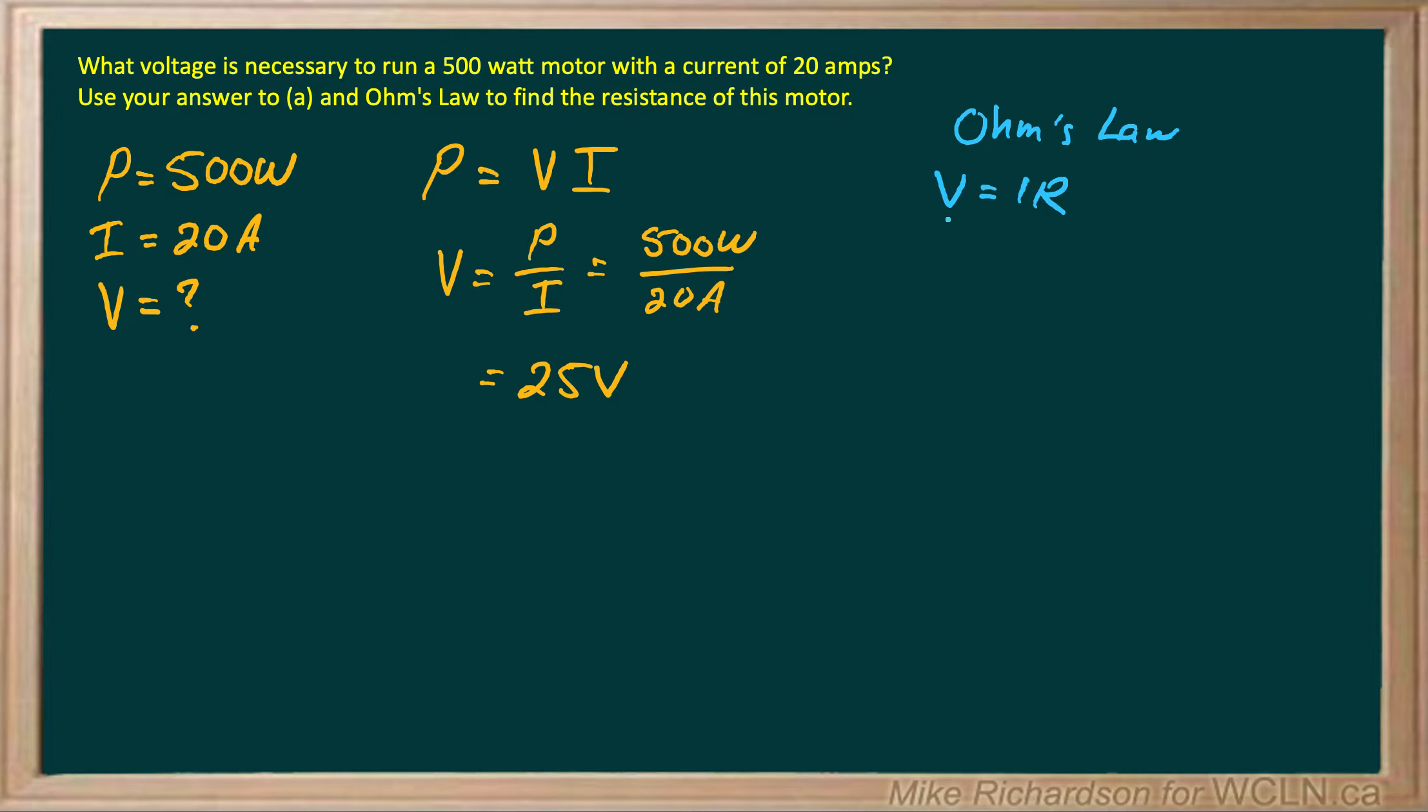We know V is 25 volts. We know I is 20 amps. We're simply trying to find R. So R will be V over I, which is 25 volts divided by 20 amps. And you'll get 1.25 ohms is the resistance of that motor.